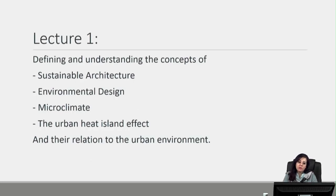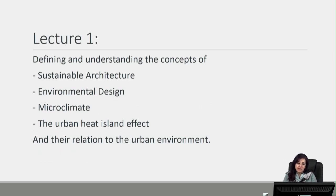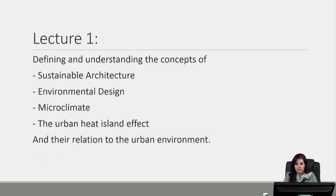Today we will be talking about four main concepts: defining and understanding sustainable architecture, what is sustainable architecture, environmental design and the reasons why we need to study it, the microclimate of a building and how it is created, and their relationship to the urban environment and the urban heat island effect and its causes.